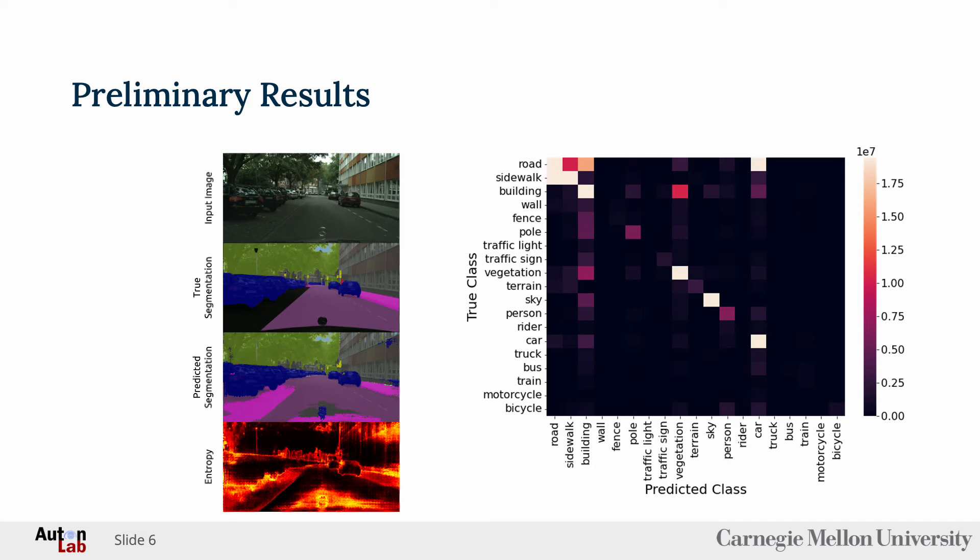The predicted segmentation image demonstrates the model excels at classifying cars, roads, and buildings, but struggles in classifying more minute objects such as road signs. In terms of entropy, we see that the model's uncertainty is minimized where multiple pixels are connected that belong to the same class, like cars. The uncertainty is maximized in pixels pertaining to boundaries between multiple classes.